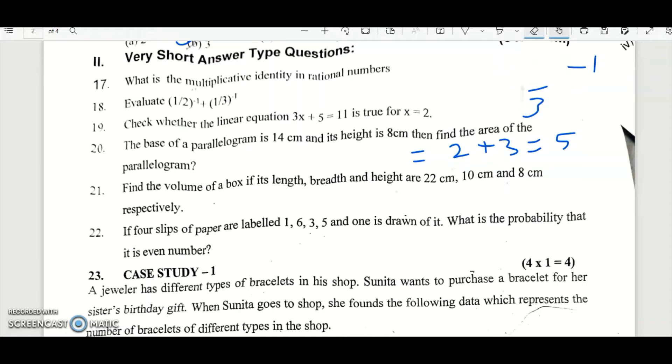So when it comes to 19th one, check whether the linear equation is true for value x equal to 2. So instead of x, we have to put 2, plus 5, equal to 11. That is 12 plus 5 equal to. 6 plus 5 should be equal to 11. Is it 11? Yes, it is 11. So this is true.